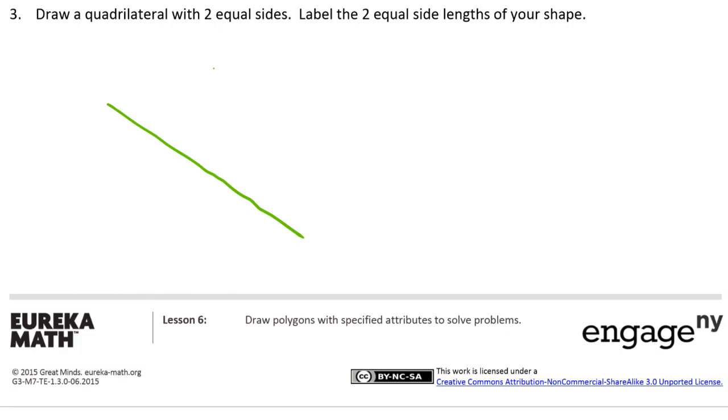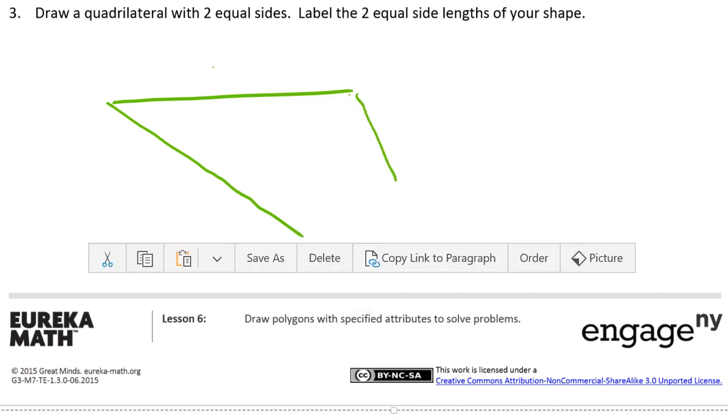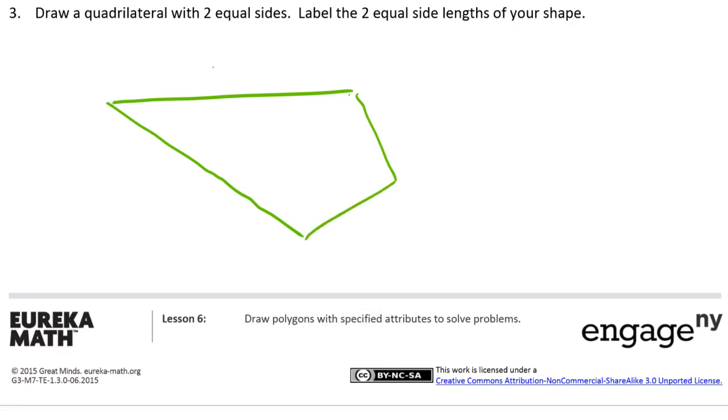And then two more sides that don't have to be five. And it's going to turn out almost like a kite, because these are almost equal but they're not quite. So these are five centimeters and five centimeters.